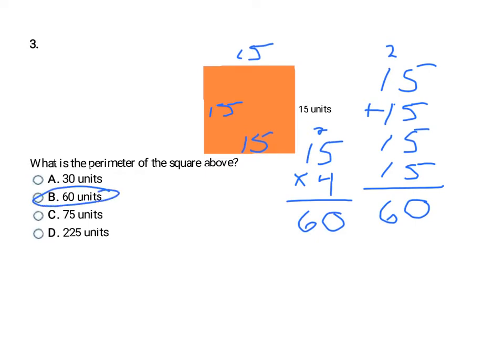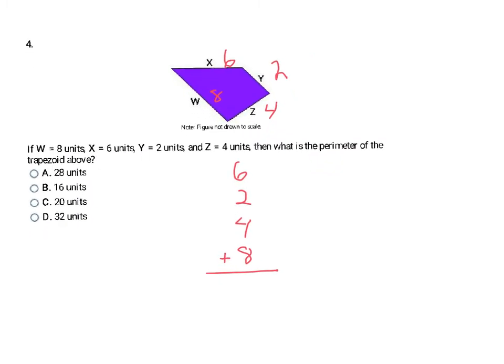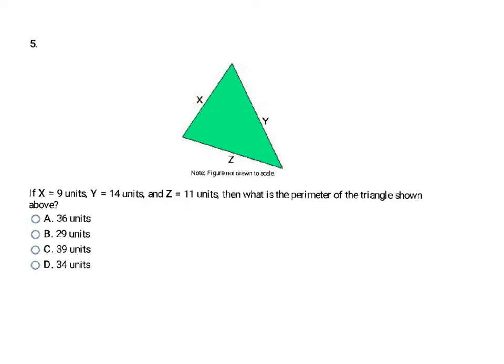This question gives a trapezoid with side lengths W is 8, X is 6, Y is 2, and Z is 4. A trapezoid has four sides and we know all four lengths, so we add them together: 6 plus 2 plus 4 plus 8 equals 20 units — choice C.